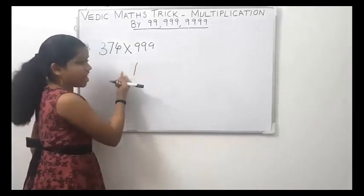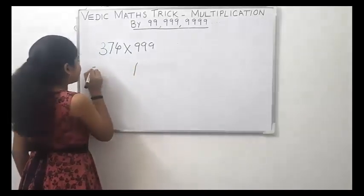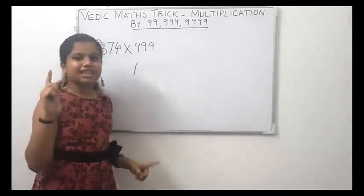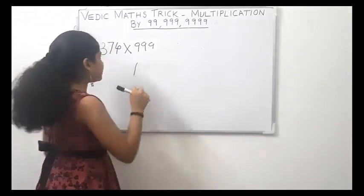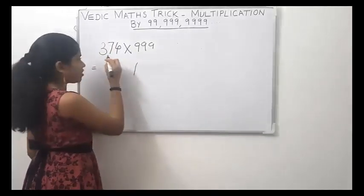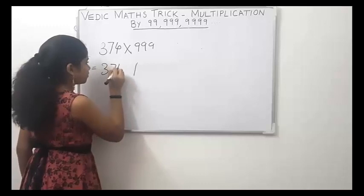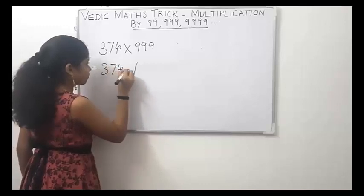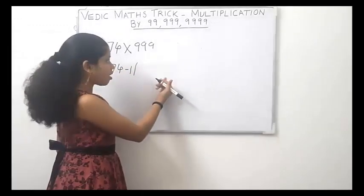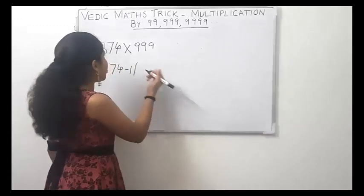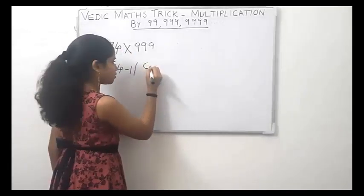In the left part of the answer, subtract 1 from 374, or write the predecessor of 374. In the right part of the answer, write the complement of 374.